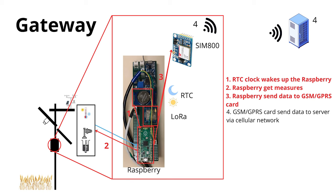An electronic card allows for taking measurements and then sending them to a server via a GSM or GPRS card over a wireless cellular network. This card is called a gateway.